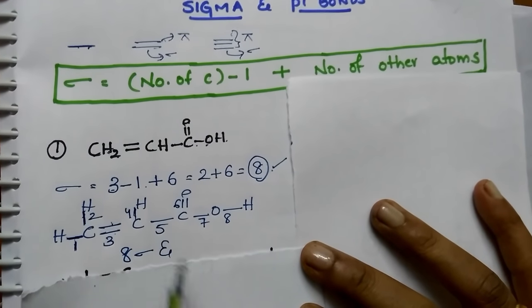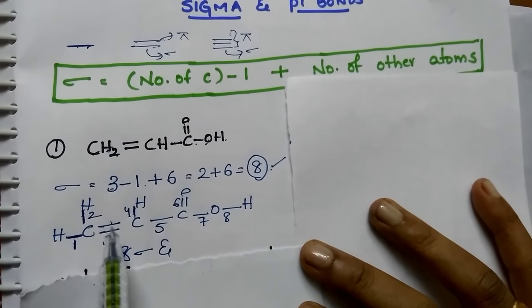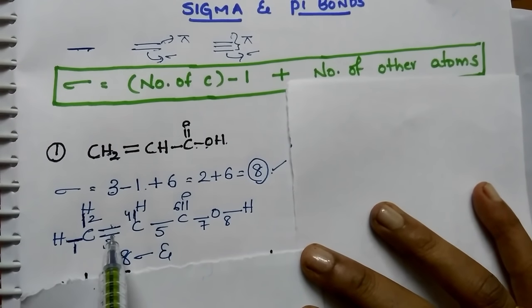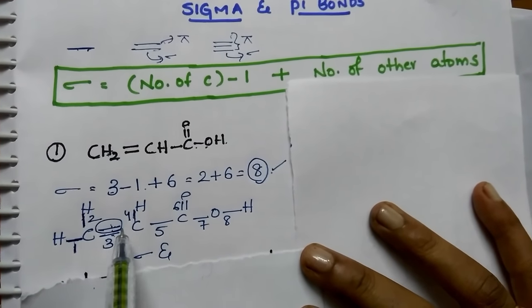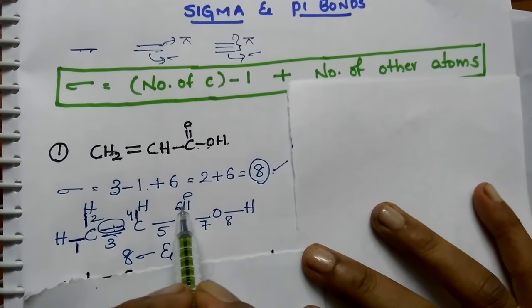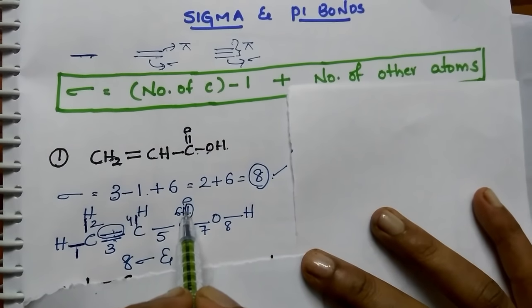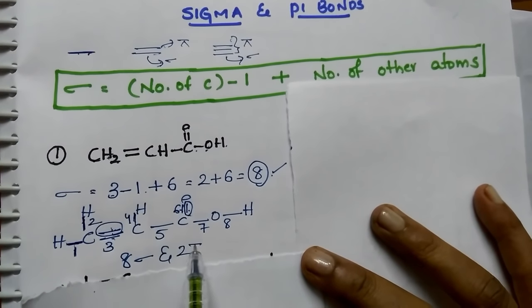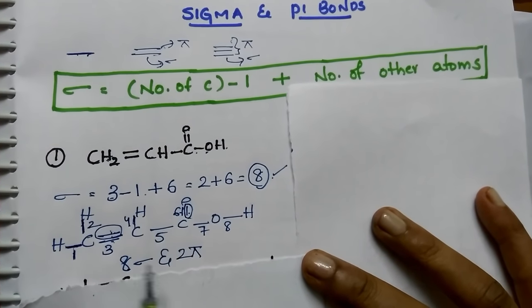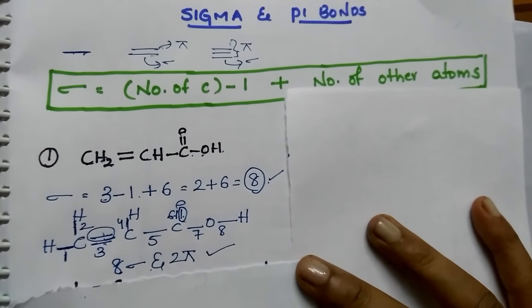Coming to the pi bonds: here 2 bonds are there, 1 is sigma, so the remaining bond is pi. Again here 2 bonds, 1 is sigma, the remaining bond is pi. So total 8 sigma and 2 pi bonds are there.